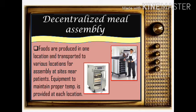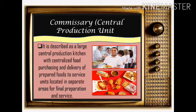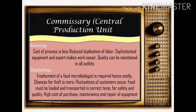The equipment used for food transport can be seen in the pictures shown. The next type of food service system is commissary or central production unit. It is described as a larger central production kitchen with centralized food purchasing and delivery — like Jollibee or school catering that serves many people. The advantage is that it lessens the workload of workers and quality can be maintained in all outlets. The disadvantage is that they need to maintain the temperature of food during transport to ensure food safety and quality.